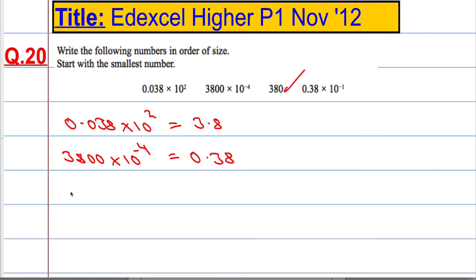Well, 380 is already done for us. And then 0.38 × 10⁻¹ is going to get 10 times smaller, so it's going to be 0.038.